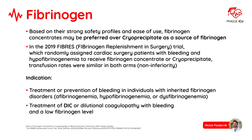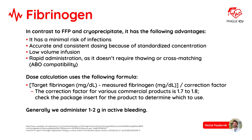Fibrinogen concentrate indications include treatment or prevention of bleeding in individuals with inherited fibrinogen disorders, and treatment of DIC or dilutional coagulopathy with bleeding and a low fibrinogen level. In contrast to FFP and cryo, it has the following advantages: minimal risk of infections, accurate and consistent dosing because of standardized concentration, low volume infusion, and rapid administration as it doesn't require thawing or cross-matching. Generally we administer 1–2 grams in active bleeding.